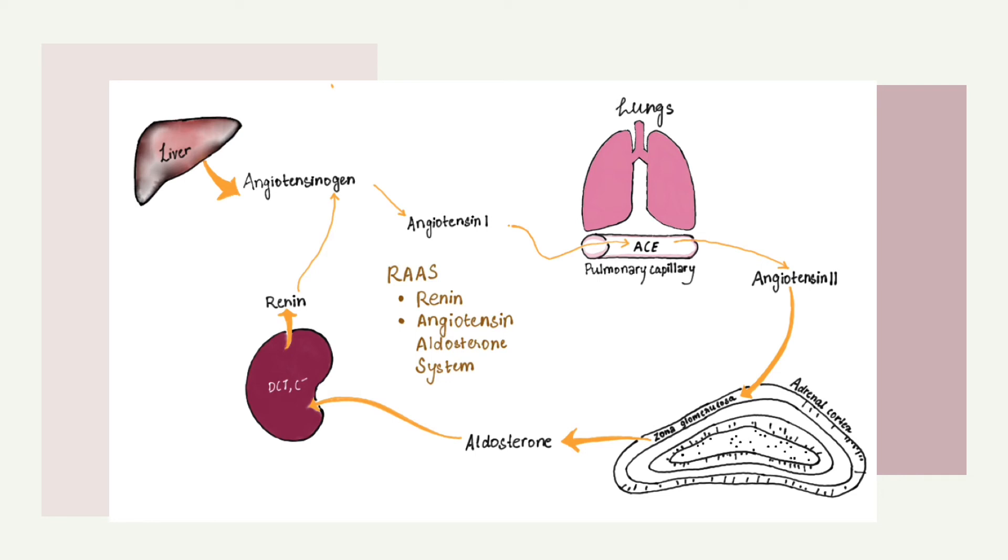Renin acts on the angiotensinogen and converts it to angiotensin 1, which passes through the pulmonary capillary and is acted upon by the enzyme produced by the lungs called the angiotensin converting enzyme. This converts the angiotensin 1 to angiotensin 2.